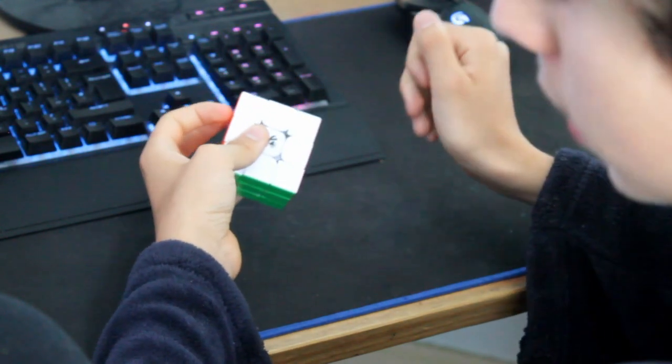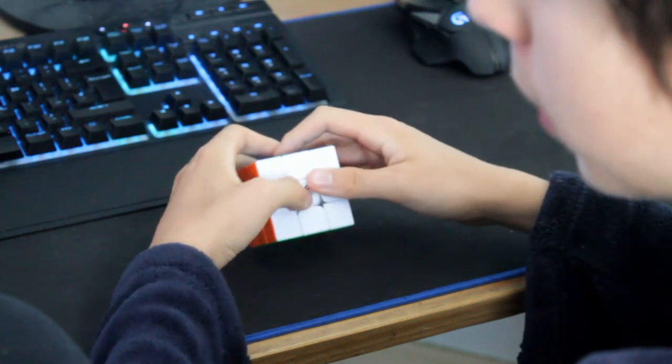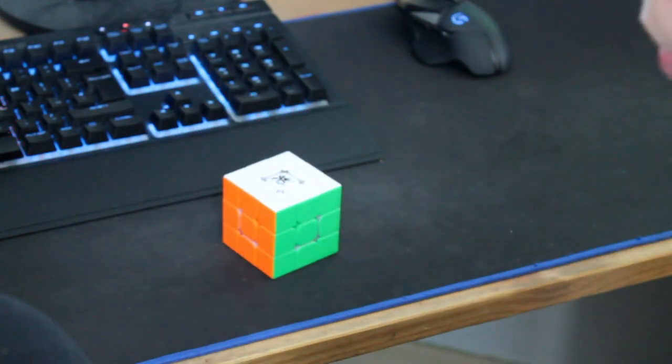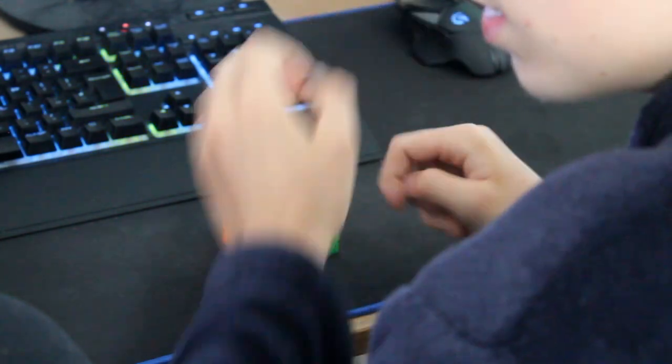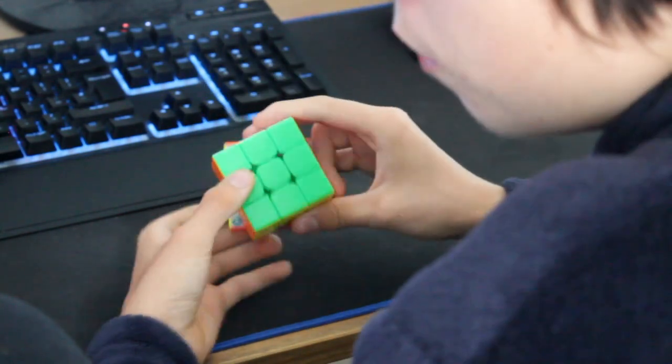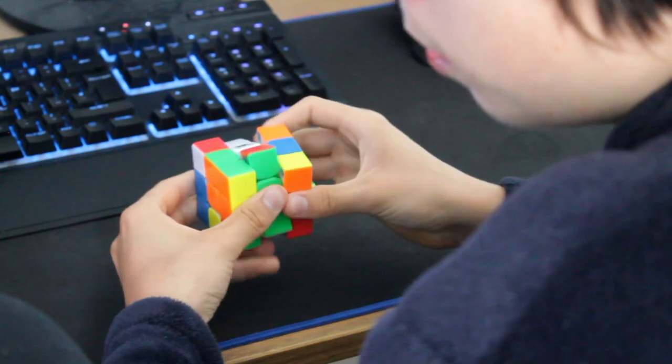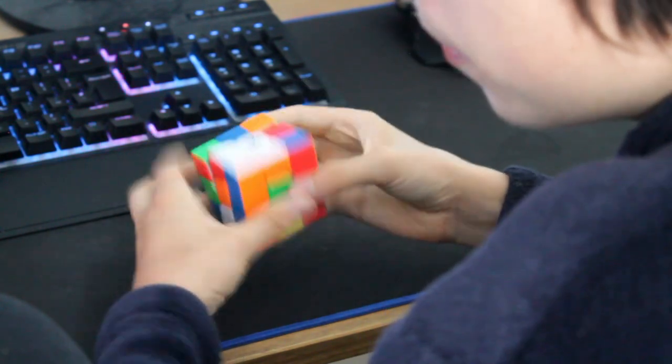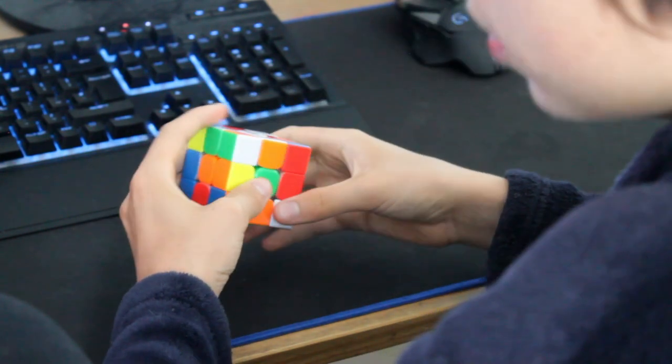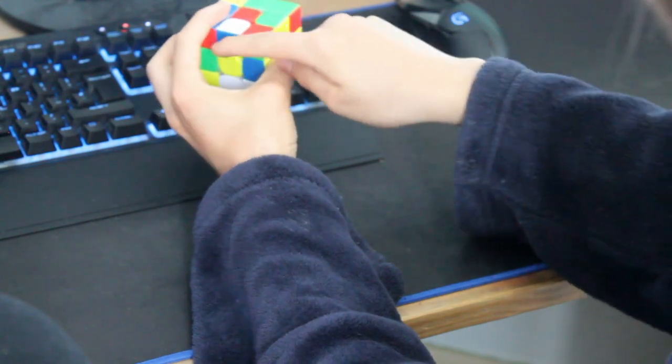Second solve was my PR at the time, 6.50. I start by doing a Z prime and a Y2, so basically I make this x-cross here where you put this edge here and then solve this corner and edge relevant to that.